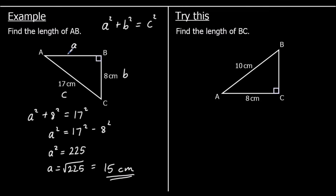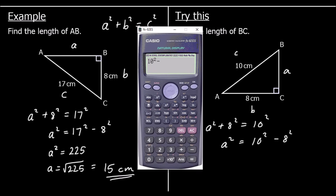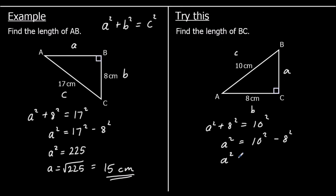One for you to try: find the length BC. We're going to use Pythagoras' theorem again. We know that a squared plus b squared equals c squared, so a squared plus 8 squared equals 10 squared. Which means a squared is equal to 10 squared minus 8 squared. 10 squared minus 8 squared is 36, so a squared equals 36. Therefore a is the square root of 36, which is 6 centimeters.